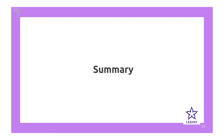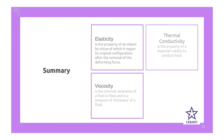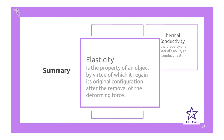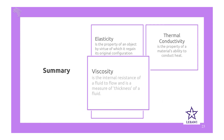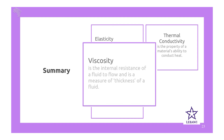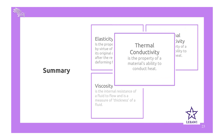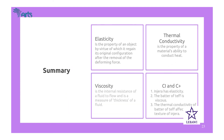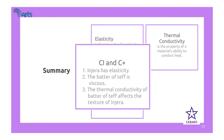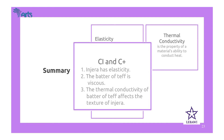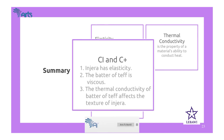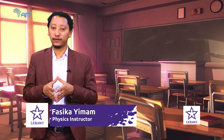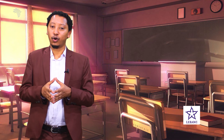Let's recap what we have seen. We have covered three properties of bulk matter: elasticity, viscosity, and thermal conductivity. Elasticity is the ability of a material to regain its original shape or size after the removal of a deforming force. Viscosity is the resistance of fluid flow and measures the thickness of the fluid. Thermal conductivity is the ability of a material to conduct heat. Injera has elasticity but no gluten, with no research yet explaining why. The teff batter's viscosity affects the weight of injera, and its thermal conductivity affects the texture of injera. Thank you.